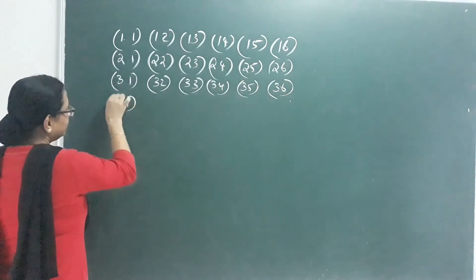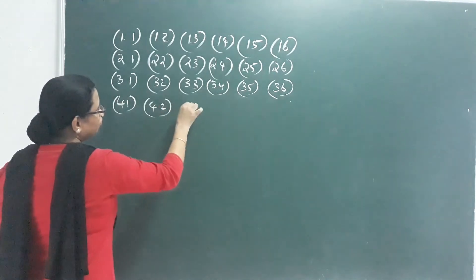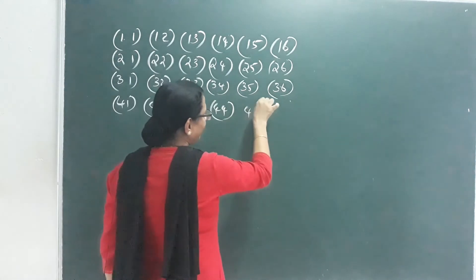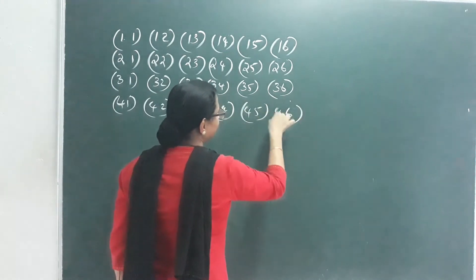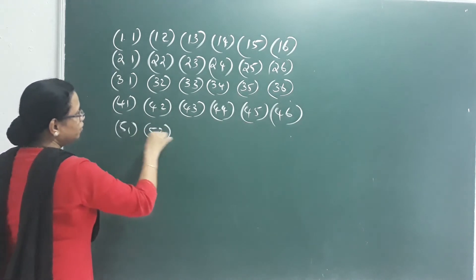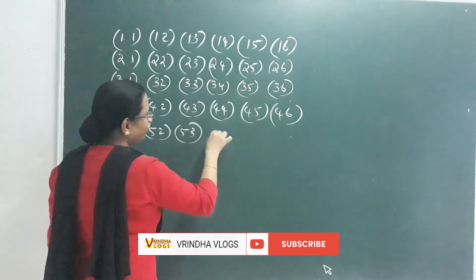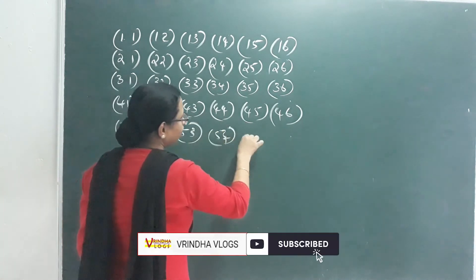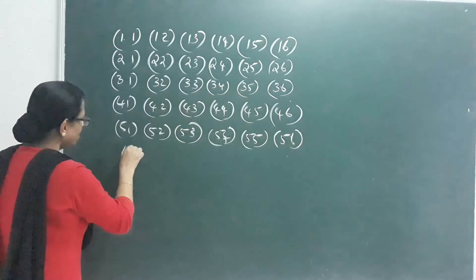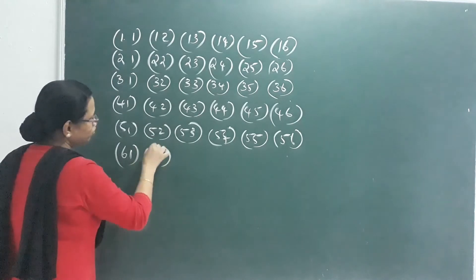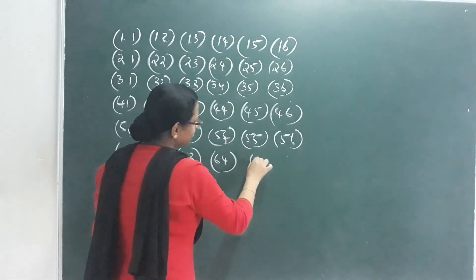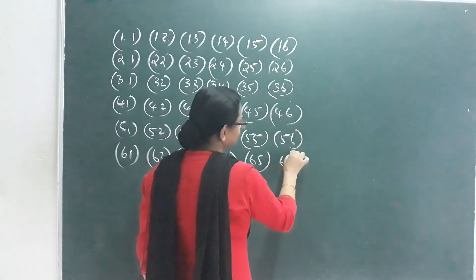When die 1 shows 4: (4,1),(4,2),(4,3),(4,4),(4,5),(4,6). When die 1 shows 5: (5,1),(5,2),(5,3),(5,4),(5,5),(5,6). When die 1 shows 6: (6,1),(6,2),(6,3),(6,4),(6,5),(6,6). Total sample space = 6×6 = 36 outcomes.